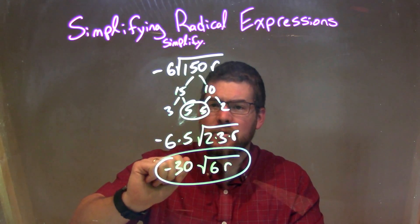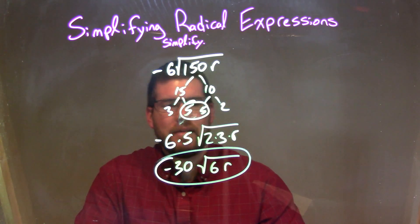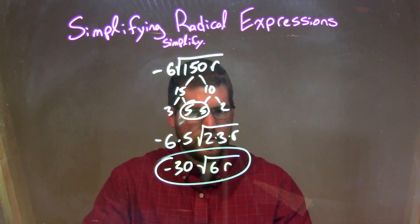I circle my pair. I have a pair of 5s right there. The only pair I have is represented by a single 5 outside the square root. All the other singles are left inside the square root,